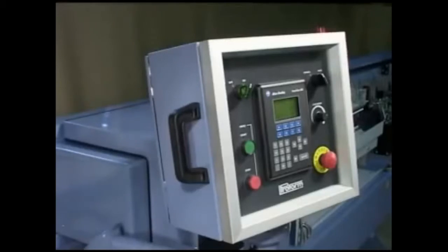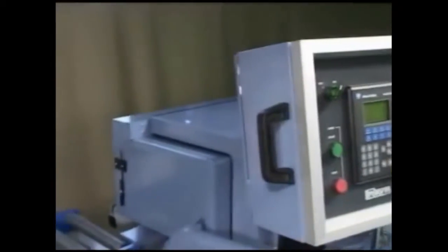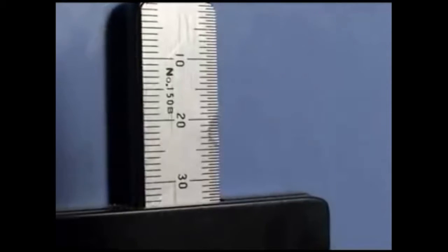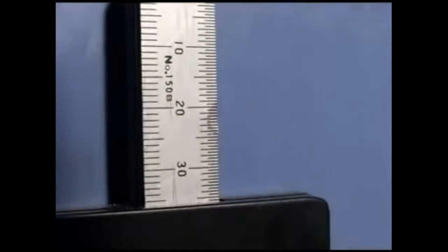The TN48 is easily adjusted to suit different board thickness and profile type. Here, our operator is resetting the machine to allow for a thicker board. Adjustments are made using a simple ratchet and the pressure beam is adjusted to the desired height.